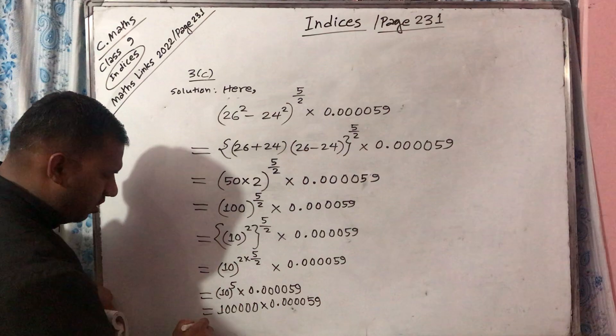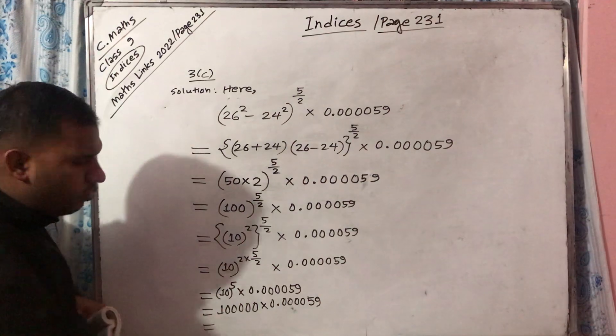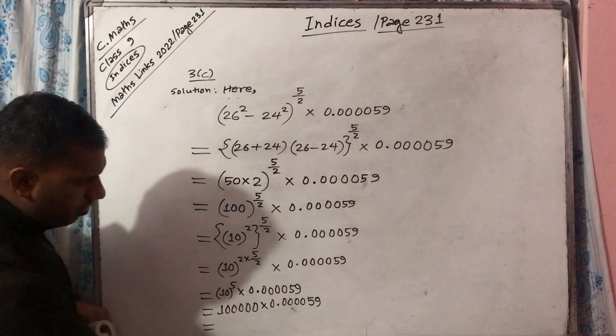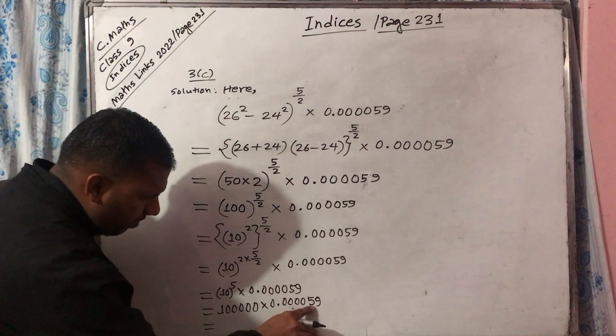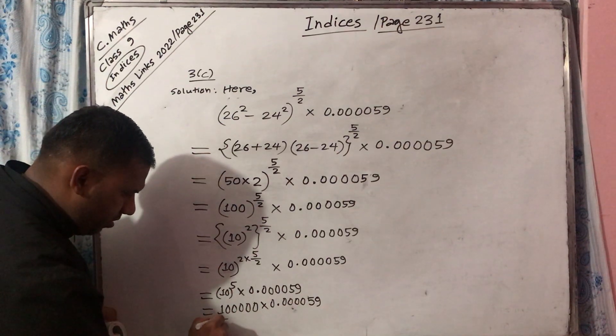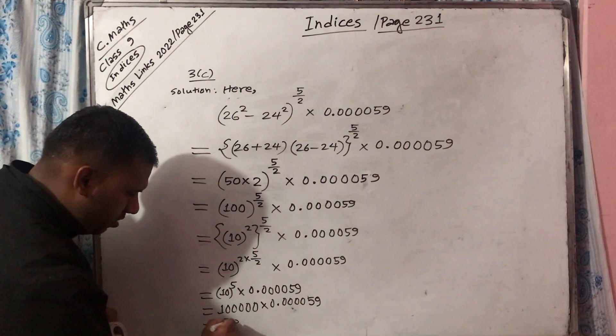The decimal is shifted towards the right side by 5 digits: 1, 2, 3, 4, 5. The answer is 5.9.